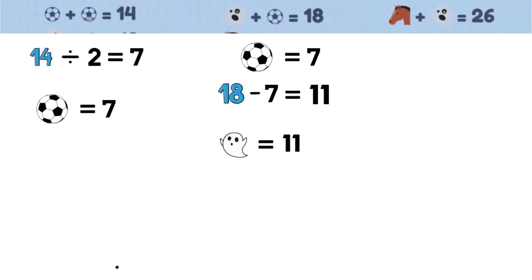Let's look at the third equation now. It says horse plus ghost equals 26. We know the ghost equals 11. To find the horse, we simply have to subtract the ghost from 26. 26 minus 11 equals 15. Therefore, the horse is equal to 15.